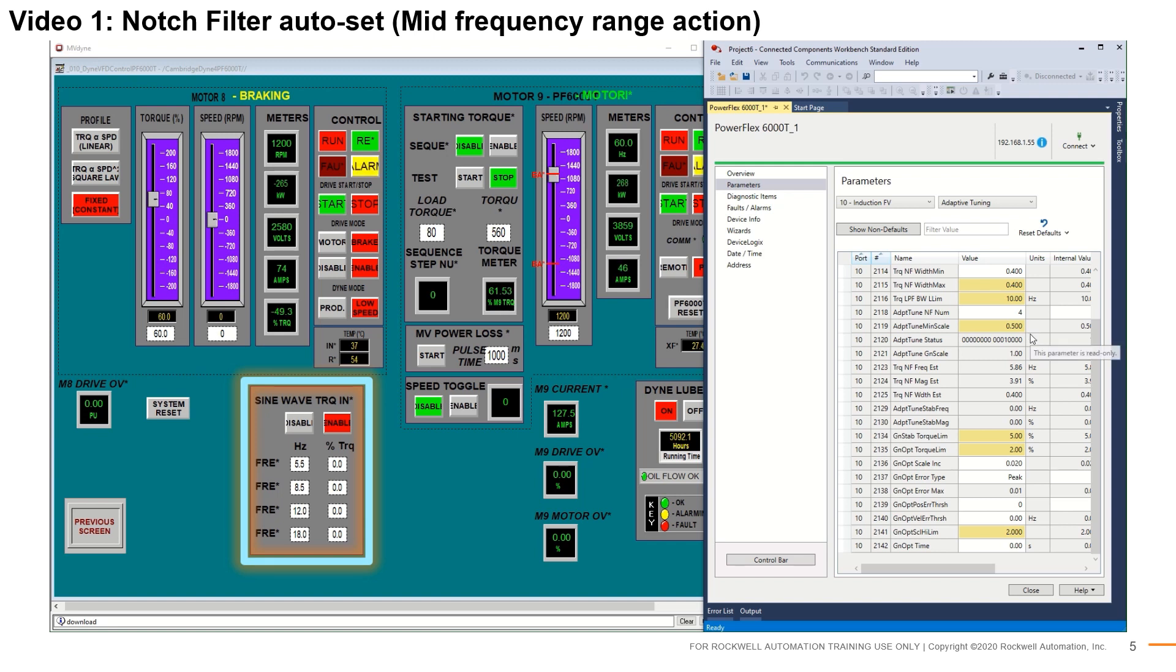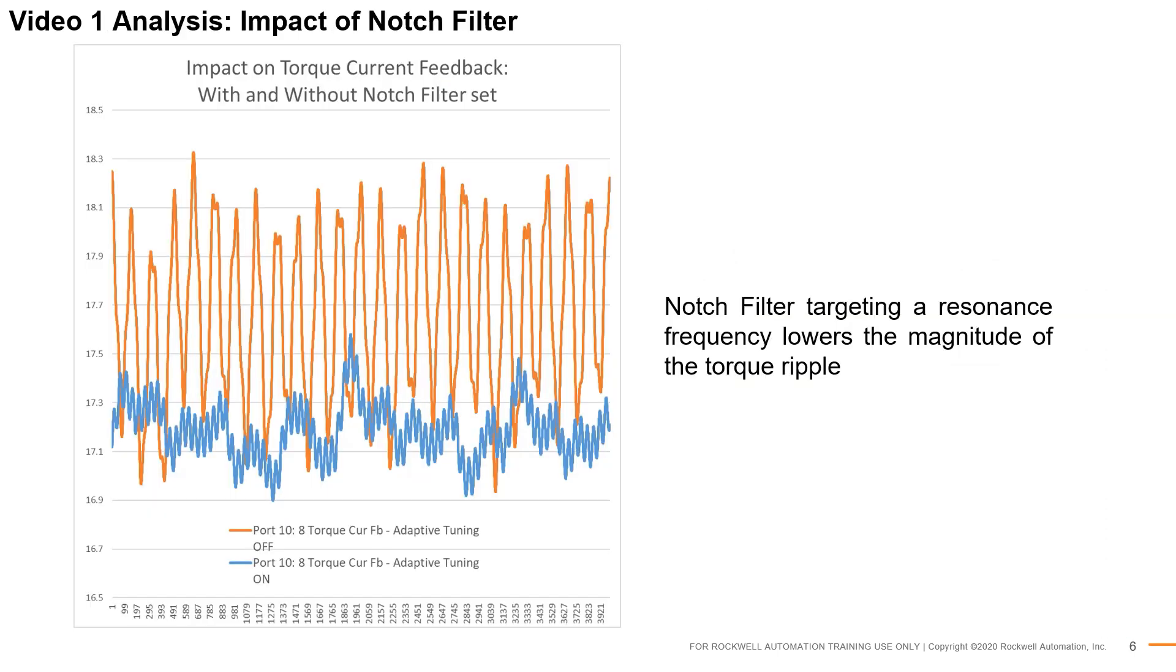Let us now review the impact of setting a notch filter targeting a resonance frequency. We can observe the impact of the notch filter. In this example, a 6 Hz sinusoidal load is constantly injected. The orange trace shows the torque current feedback when the load is applied and notch filtering is inactive.